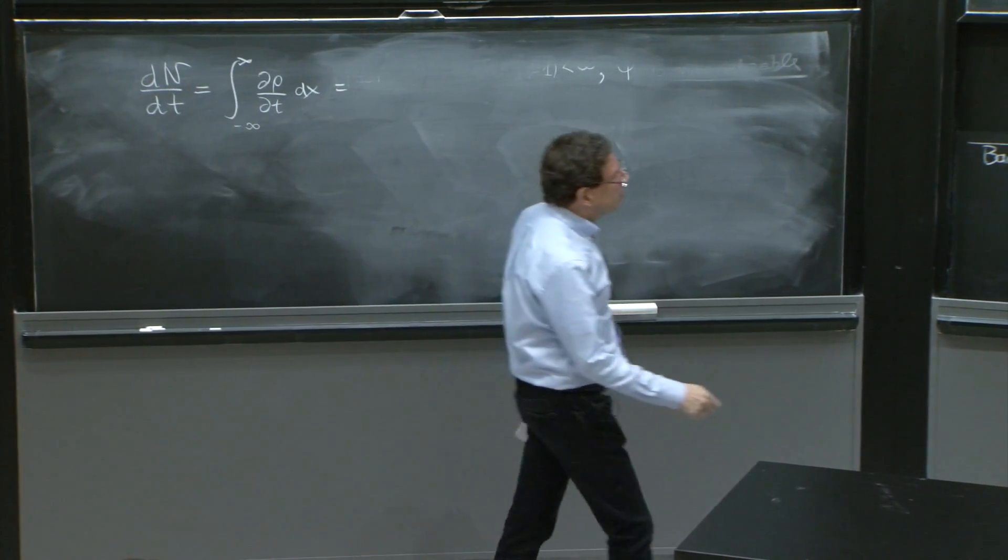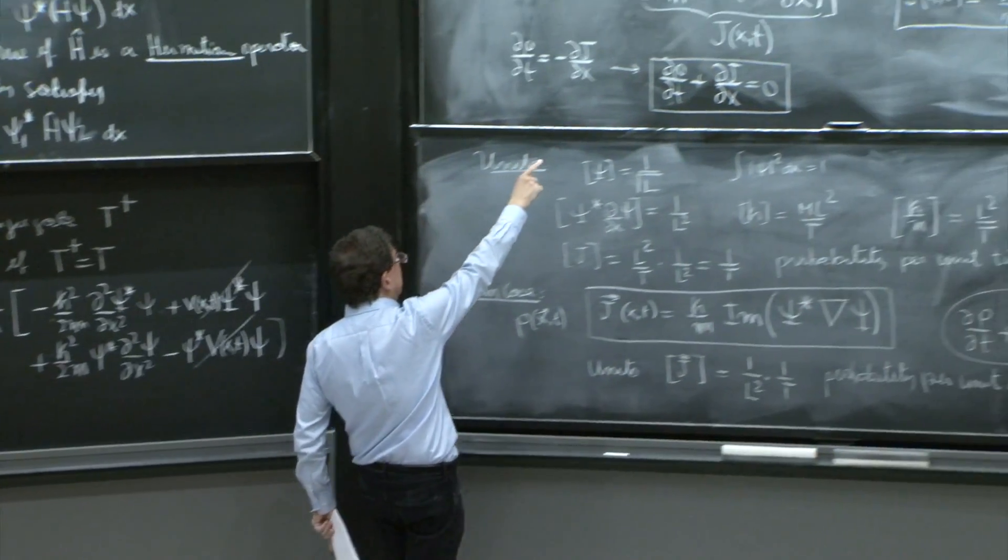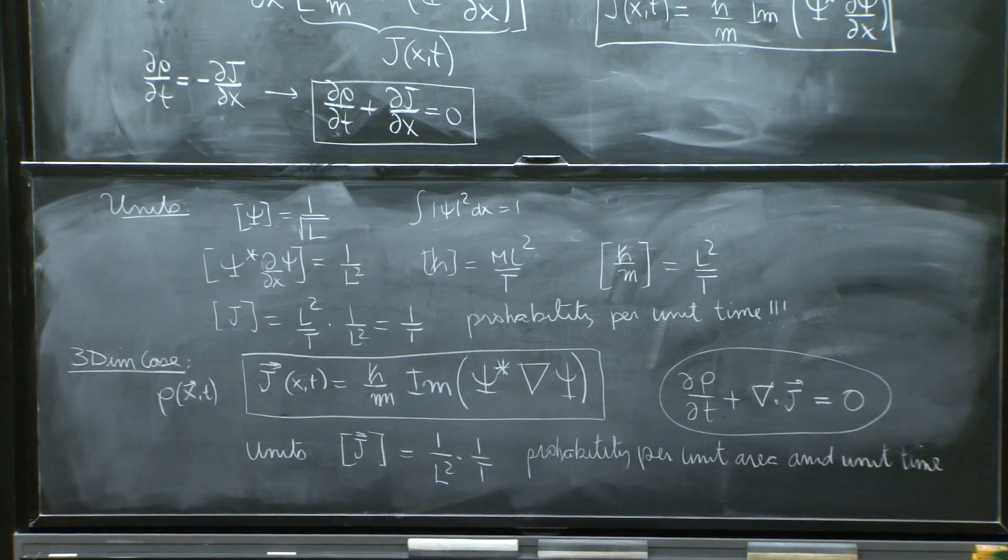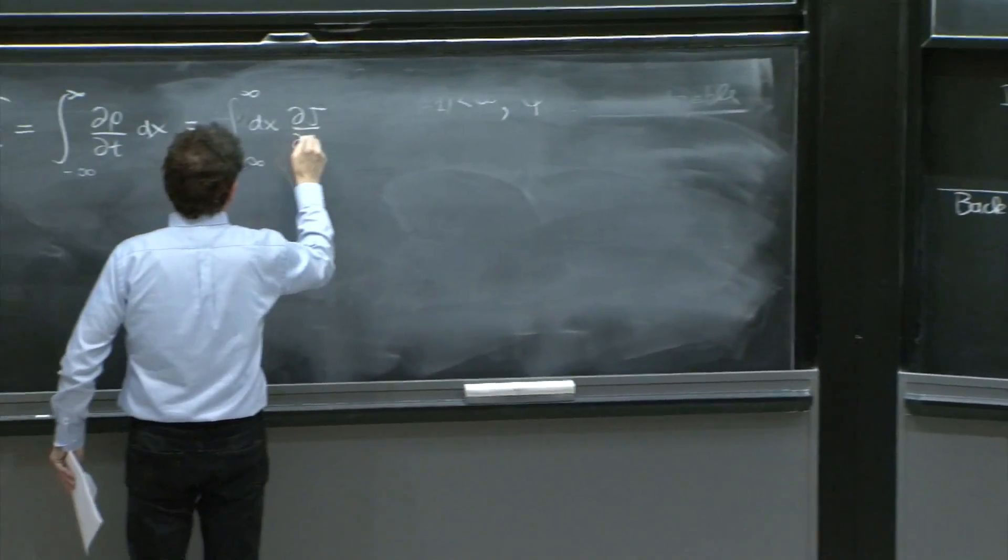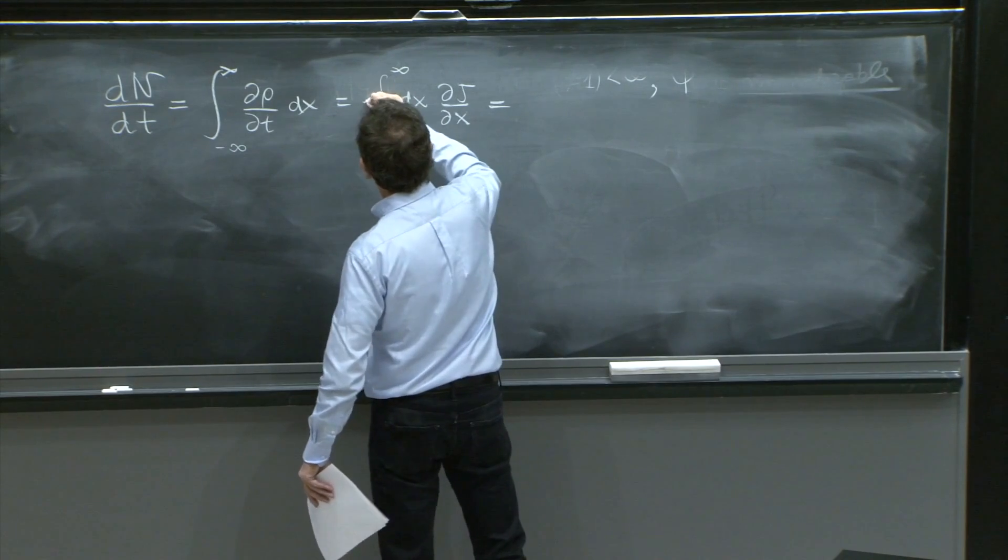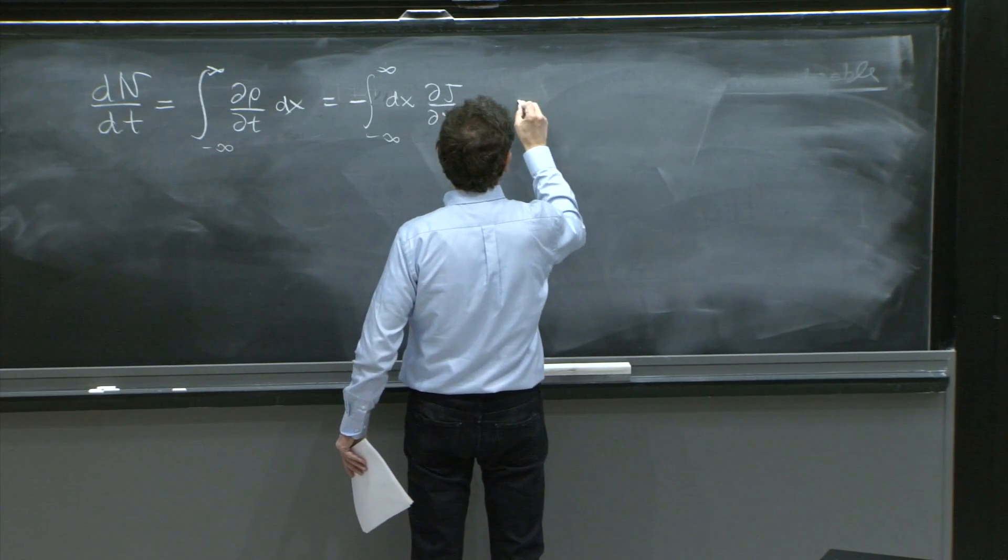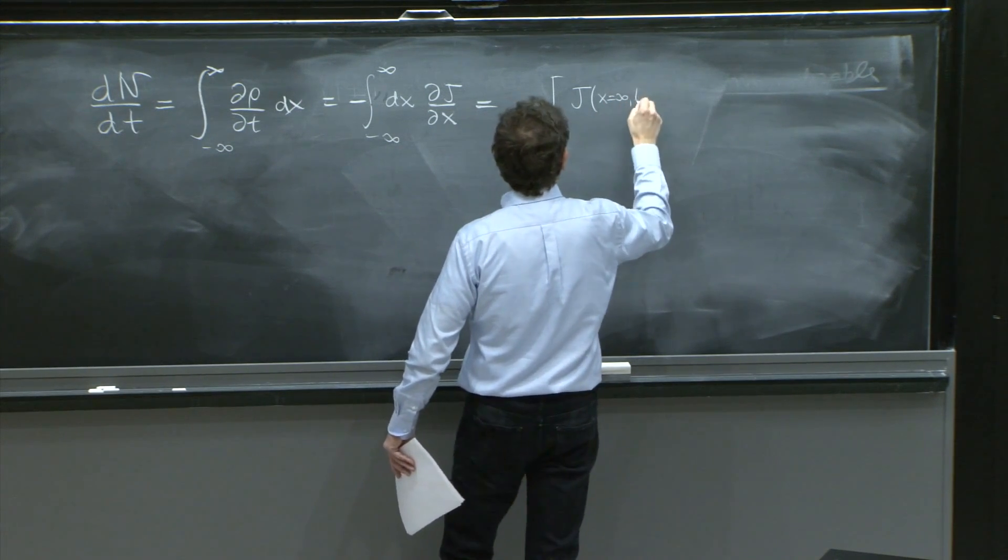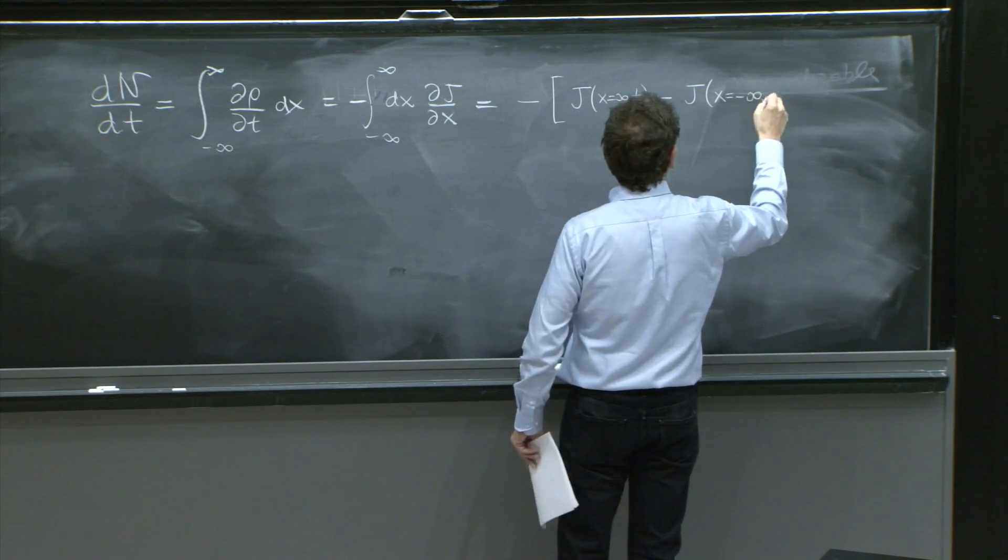But we showed now that d rho dt is minus dj dx. So here you have integral from minus infinity to infinity dx of dj dx. And therefore, this is, I should have a minus sign, because it was minus dj dx. This is minus the current at x equals infinity and t, minus the current at x equals minus infinity and t.